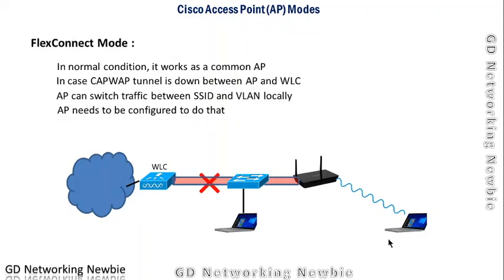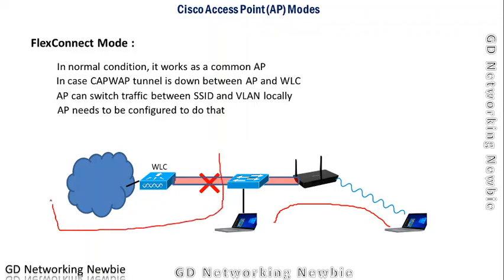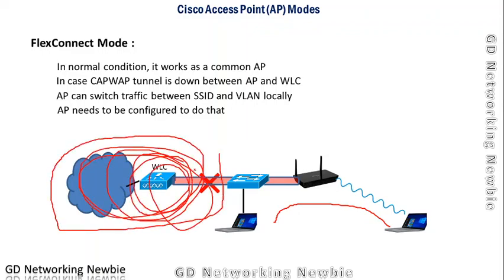In FlexConnect mode, under normal conditions the access point works as a standard AP. However, if the CAPWAP tunnel between the access point and the wireless controller goes down, the access point can switch traffic between SSIDs and VLANs locally. This requires the access points to be pre-configured to handle local traffic management.